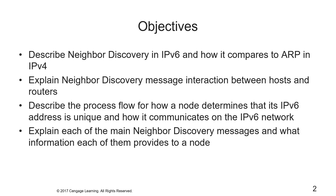On-link means that nodes are actively attached and interacting with the current network; off-link means they are not. Those processes are router solicitation, router advertisement, neighbor solicitation, neighbor advertisement, and redirect. We'll talk about the packet layouts and field formats of neighbor discovery messages and options, as well as operational details of neighbor discovery, and show a few examples of packet captures.